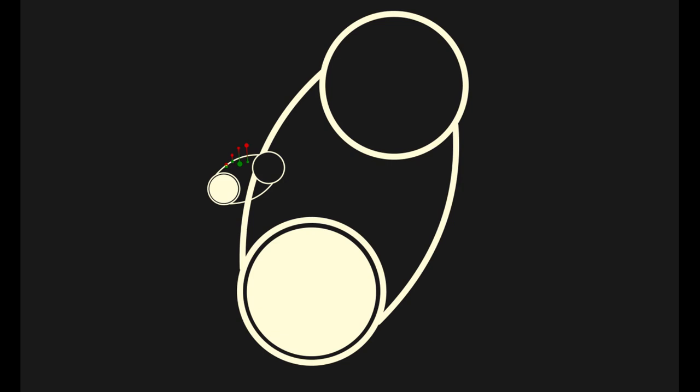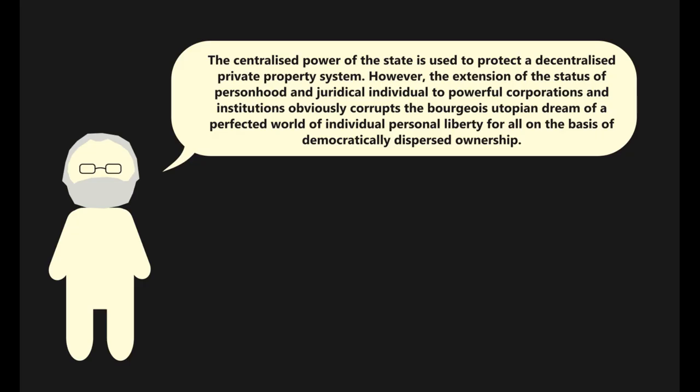Another good example of a contradiction within capitalism is the contradiction between private property and the capitalist state. Here's what Harvey has to say on this contradiction: The centralized power of the state is used to protect a decentralized private property system.